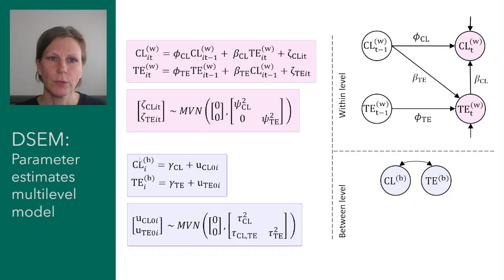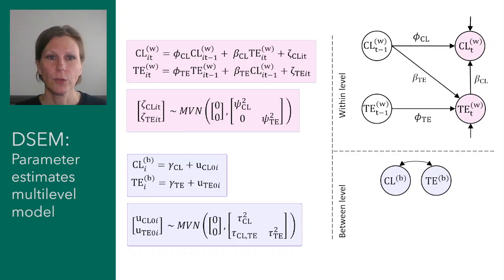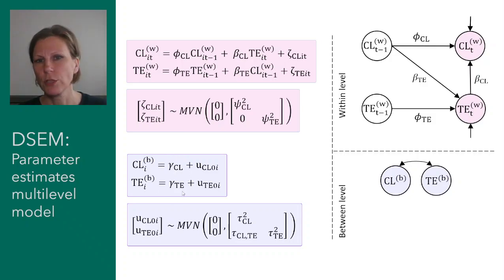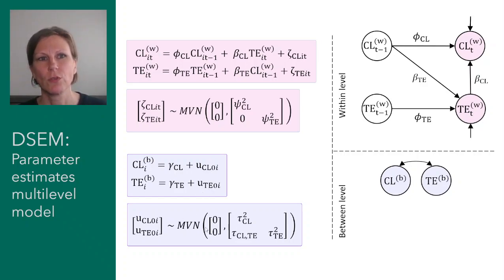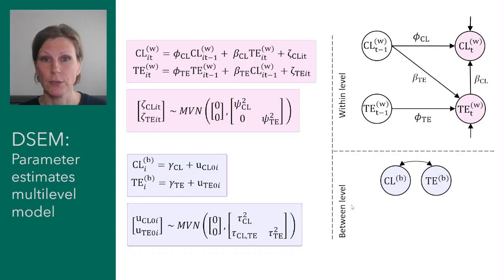Parts of closeness and tension that cannot be predicted are indicated by these arrows — these are the residuals, referred to as zetas. Those zetas come from a multivariate normal distribution with means of zero, and this is their covariance matrix. They each have a variance but no covariance between them, since there's no two-headed arrow between the residuals. At the between-person level we estimate the grand means (gammas), with individual deviations assumed to come from a multivariate normal distribution with means of zero.